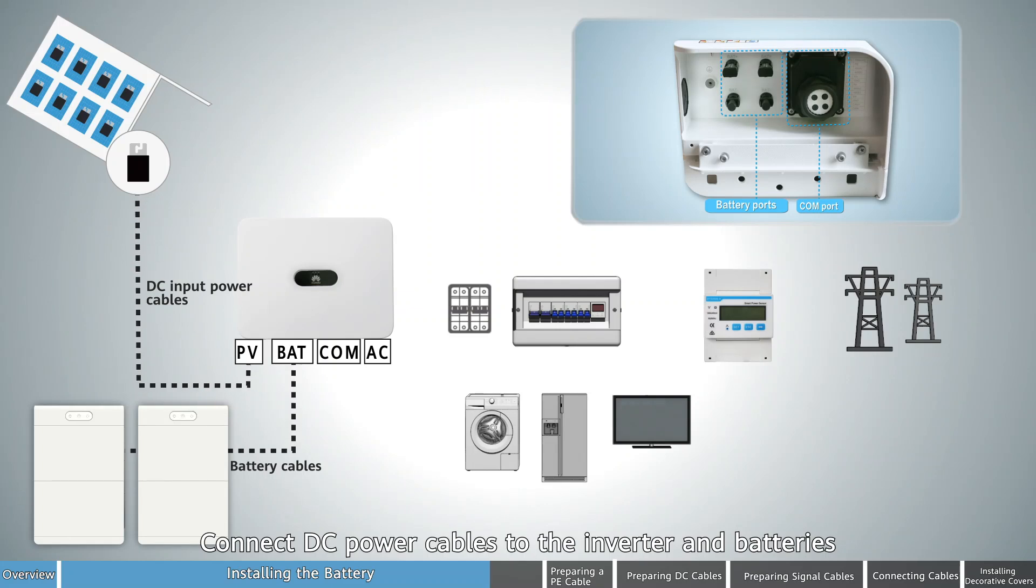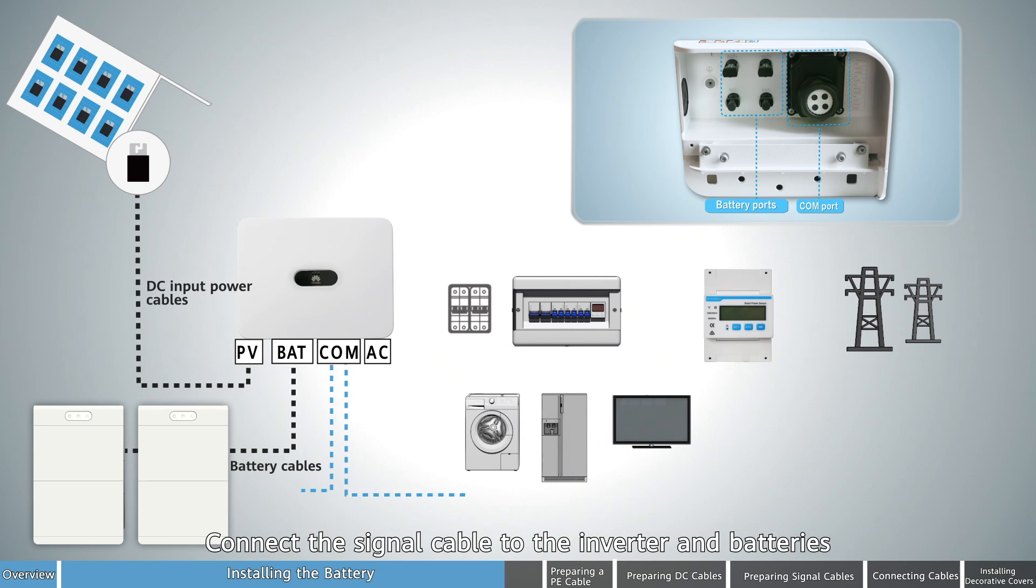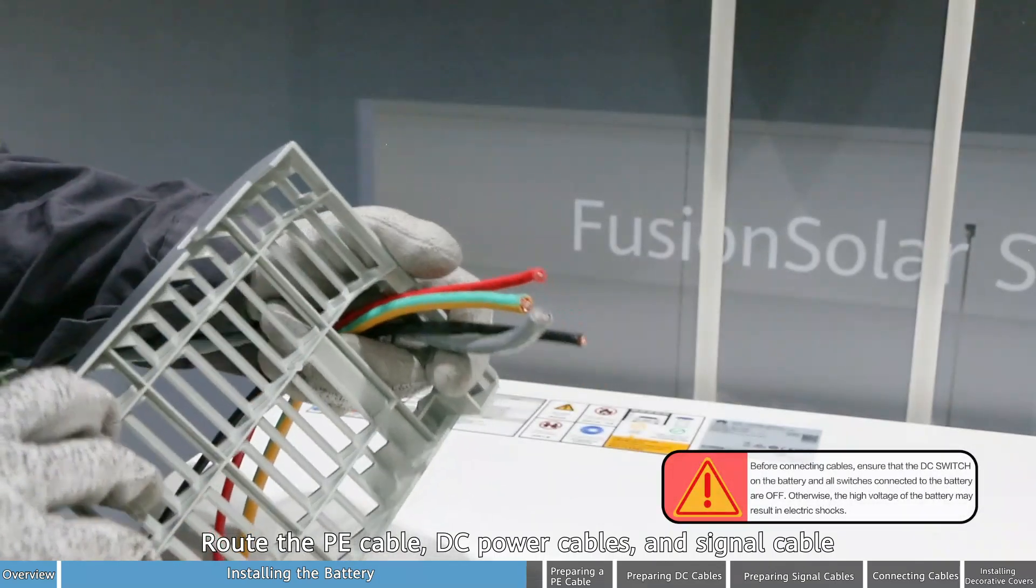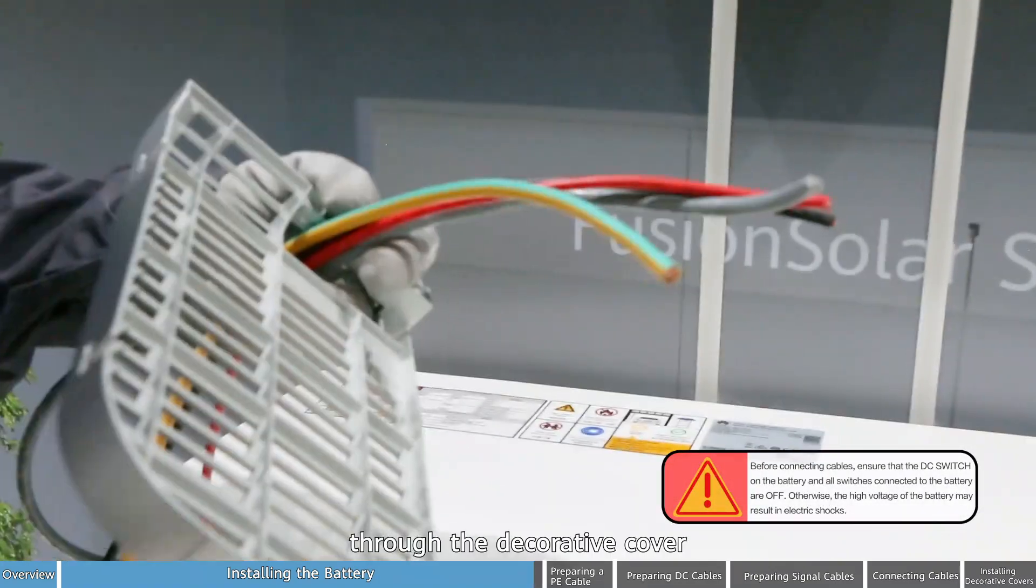Connect DC power cables to the inverter and batteries. Connect the signal cable to the inverter and batteries. Route the PE cable, DC power cables, and signal cable through the decorative cover.